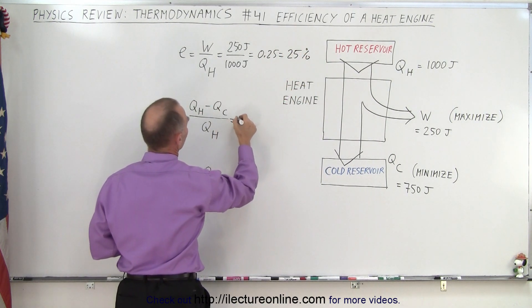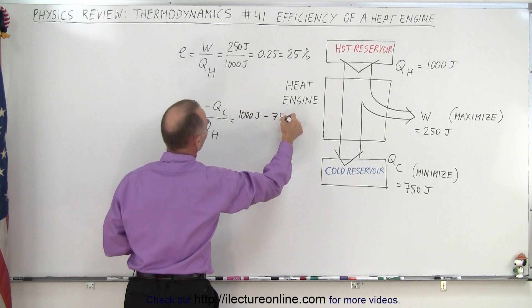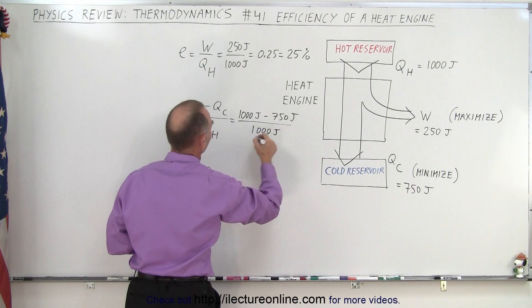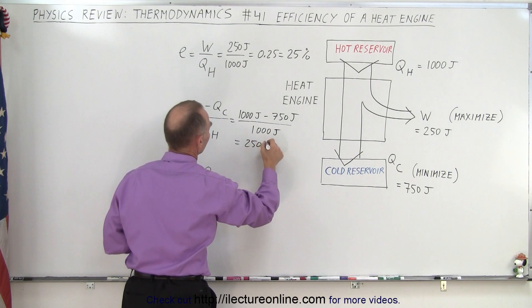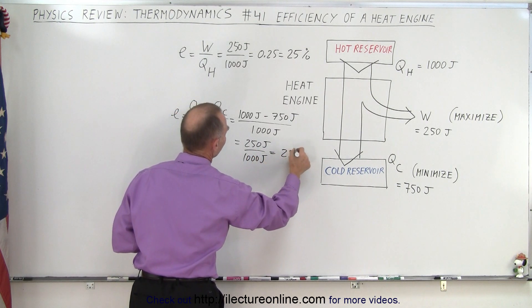Over here, we have Q-hot. That's 1,000 joules minus 750 joules divided by 1,000 joules, which is equal to 25% again.